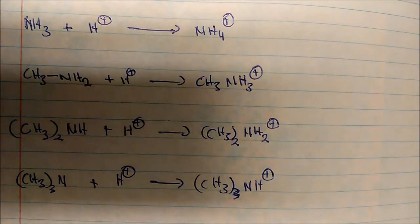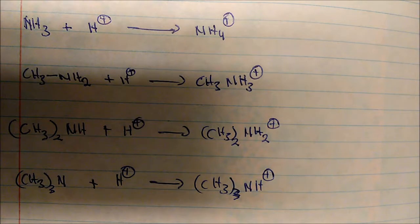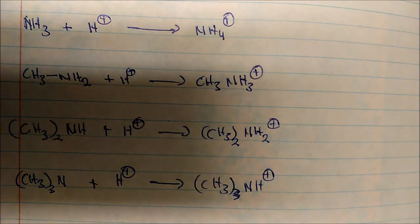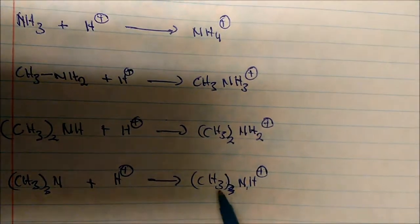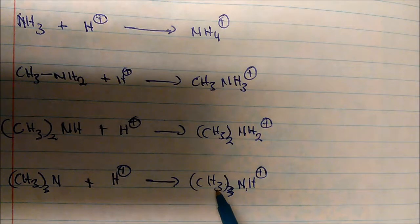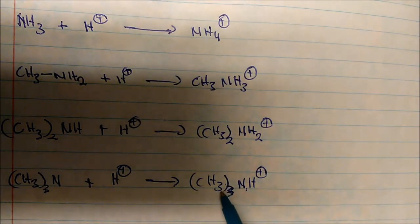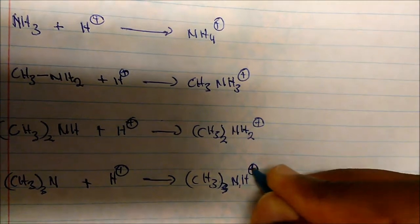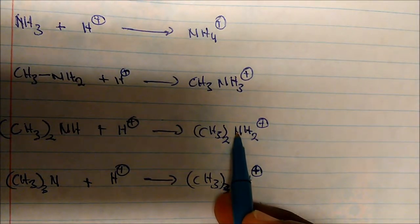My question to you is: out of ammonia, methylamine, dimethylamine, and trimethylamine, which one is the strongest base? Think about it intuitively. When we draw the conjugate acid of bases, the more electropositive atoms we have to support the positive charge, the stronger the base. When I draw the conjugate acid of trimethylamine, we have three carbons — electropositive atoms — that help stabilize this positive charge.